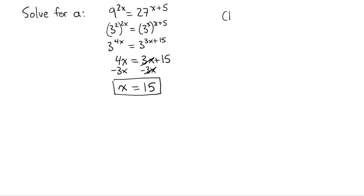If you wanted to check that, we could do that by simply subbing it into the left side. 9 to the power of 2 times 15, that's a really big number. But we could check that. We just type in 9 to the power of 30 into our calculator.